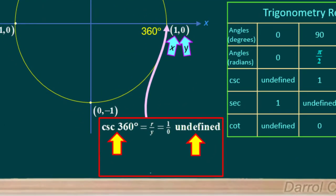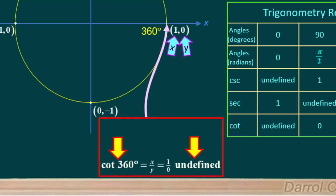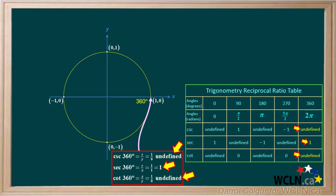Lastly, we'll go to 360 degrees. The cosecant of 360 degrees is r over y, which is 1 over 0, and 1 over 0 is undefined. The secant of 360 degrees is r over x, or 1 over 1, which is equal to 1. And the cotangent of 360 degrees is x over y, or 1 over 0, and 1 over 0 is undefined. We'll record the values for the cosecant, secant, and cotangent of 360 degrees in our table.